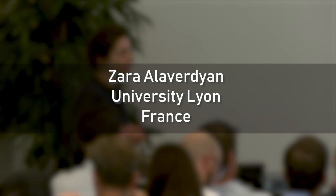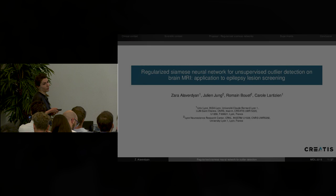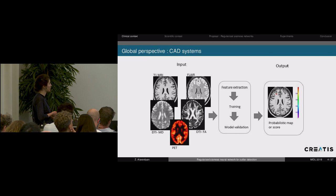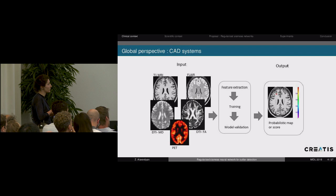I'm going to talk about regularized Siamese networks for anomaly detection on brain MRI images with an application to epilepsy lesion detection. We're developing computer-aided diagnosis systems. Such systems receive at input single or multiple modalities of imaging data, perform model training, and then output probabilistic maps or score maps depending on the task.